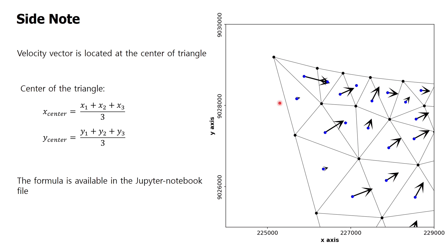A side note: in some numerical simulation software, the velocity is calculated at the center of the triangle and not at the grid point, as shown in the image. In that case, we need to calculate the coordinates of the center of the triangle. We can use the grid points to calculate the center using this equation. I also put the formula in the Jupyter notebook in case you don't have the center of the triangle.